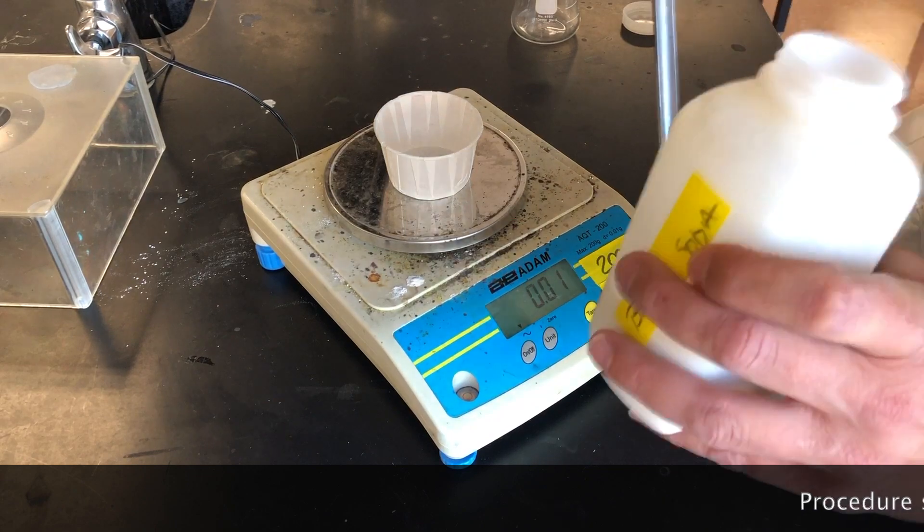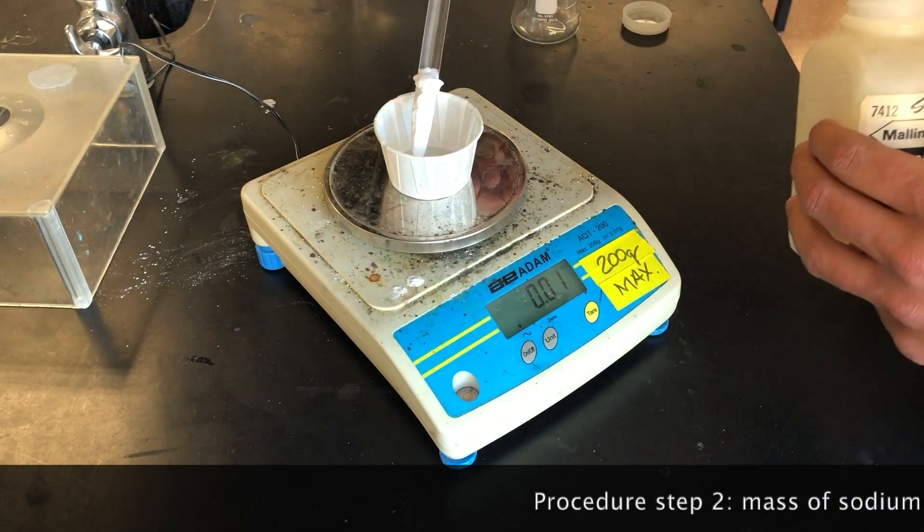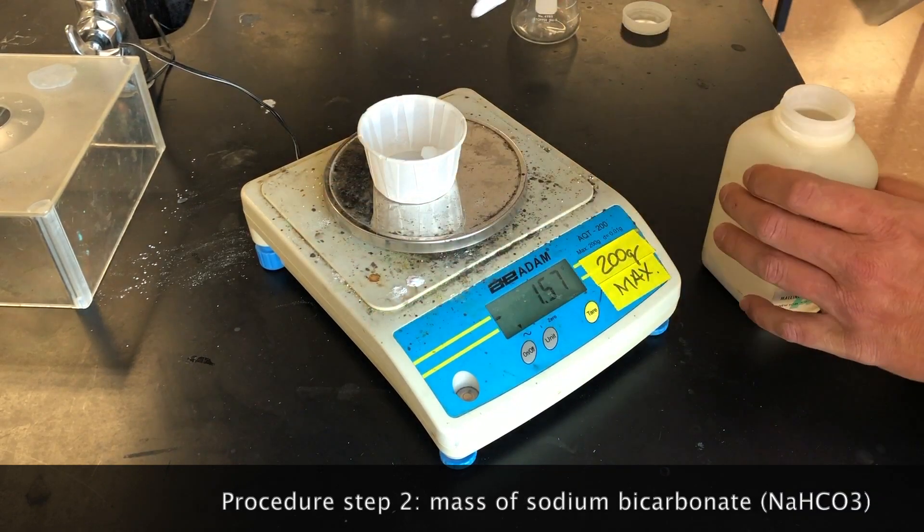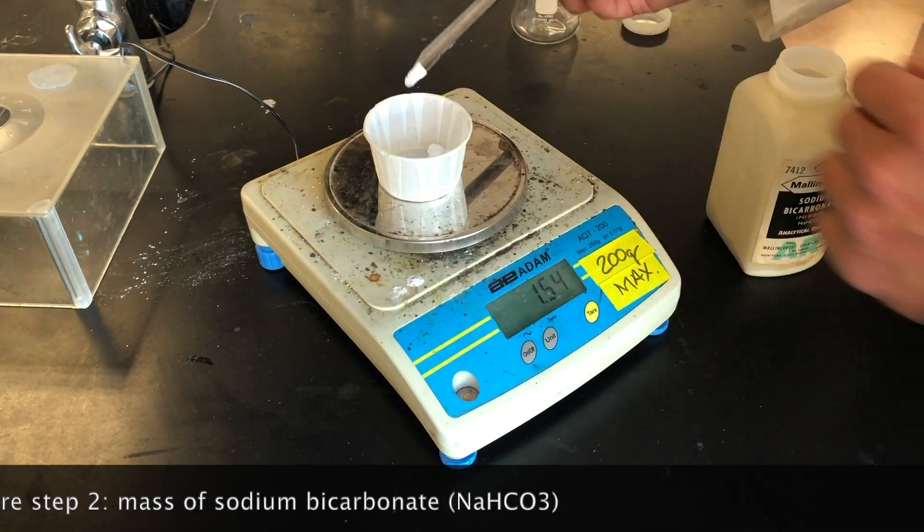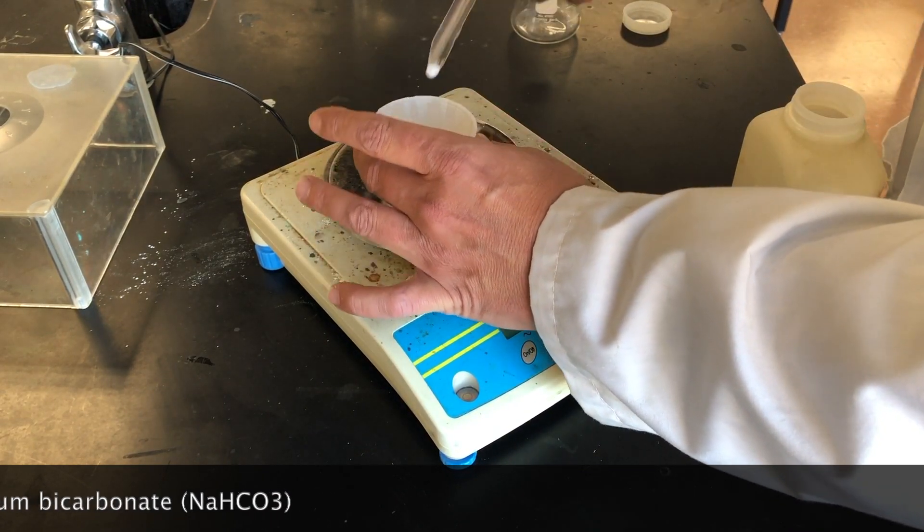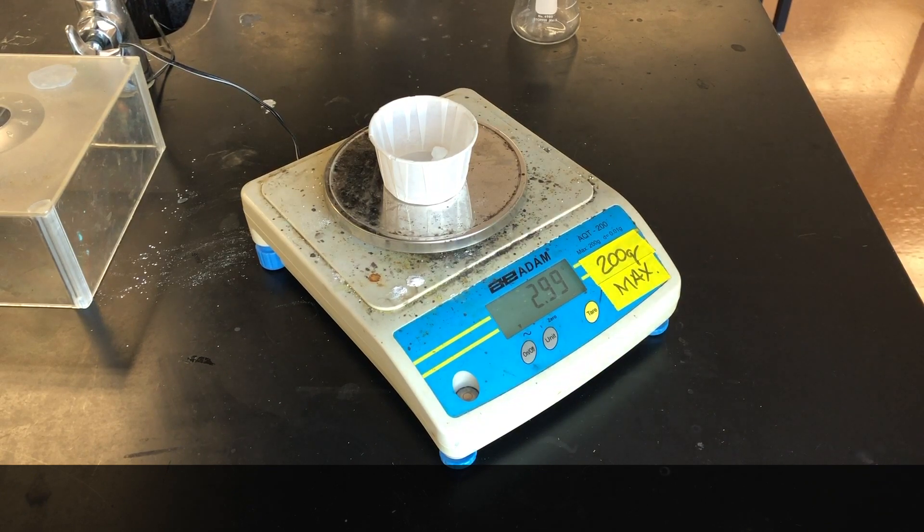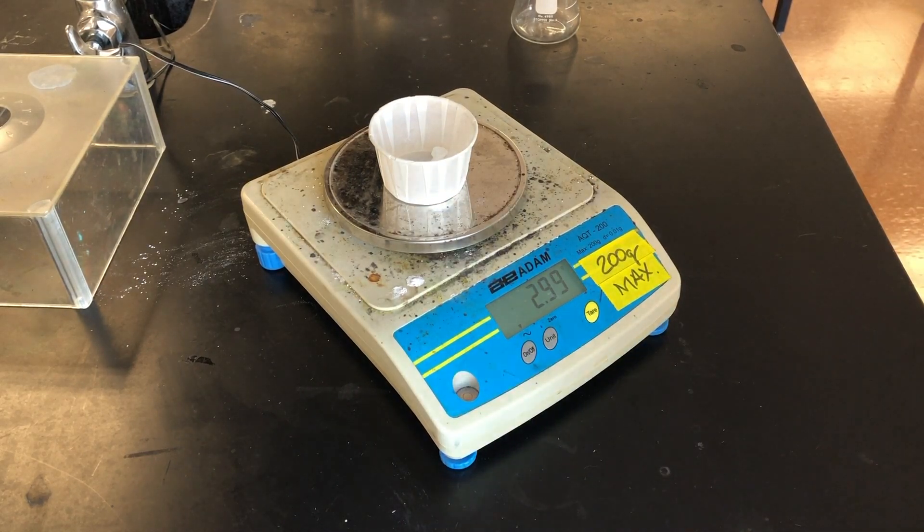Here we have to add between 2.5 and 3 grams of the sodium bicarbonate. Here we are at 2.99 grams. 2.99 grams of sodium bicarbonate, and we're going to record that amount in our data table as well. Then we're ready to proceed to the next step.